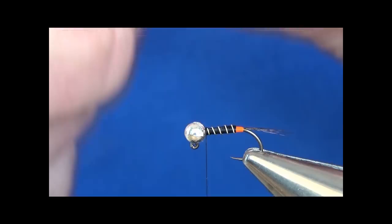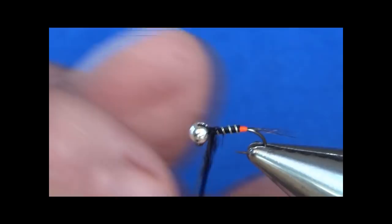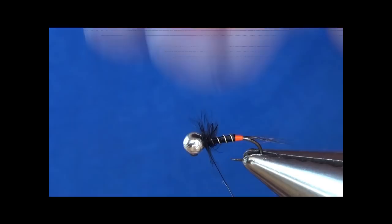I'm just going to tie them in there in two sections. Take away that piece of waste and wind them just up to the head really, creating a nice soft hackle. Just bring your thread lightly through them.